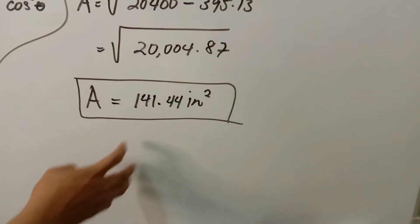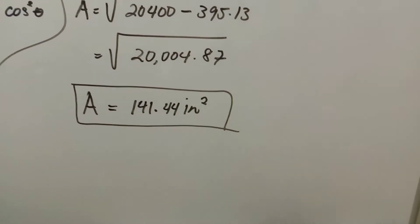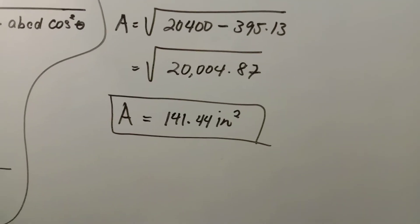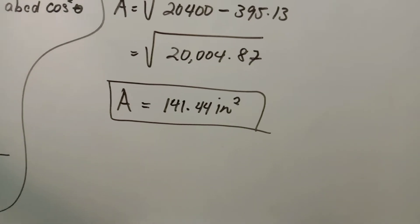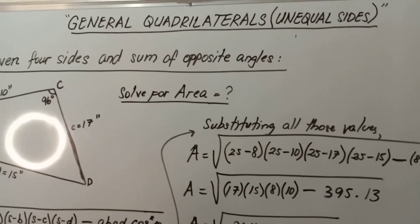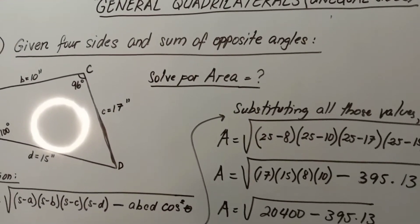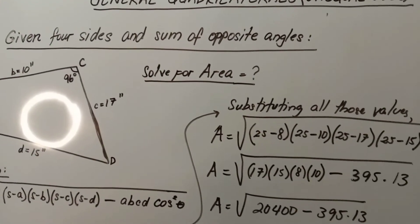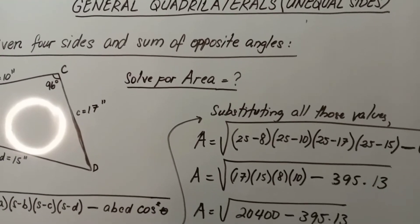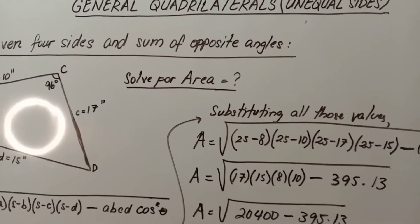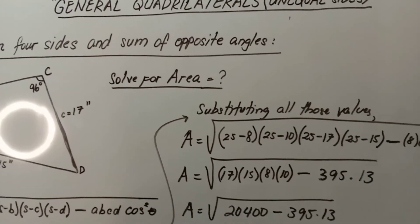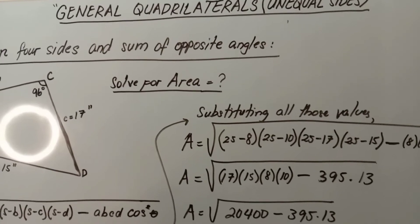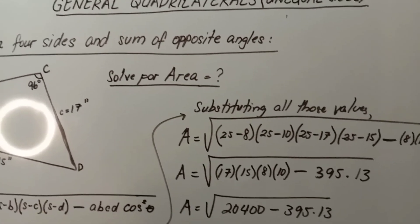I hope you understand this example problem related to the second condition of general quadrilaterals: given four sides and the sum of opposite angles, with all sides unequal. I hope it will be useful for students studying mathematics in high school and college. Please like, share, and subscribe to our channel for future videos. Thank you for watching and have a nice day!